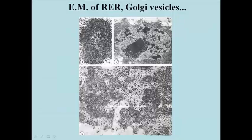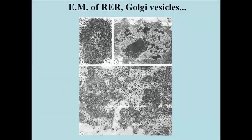The RER can assume a variety of shapes, like the whorled form at the upper left in this slide. The TEM at the upper right shows a nucleus surrounded by lots of RER, and the lower electron micrograph shows RER in the vicinity of Golgi vesicles.